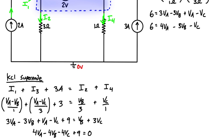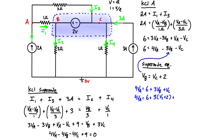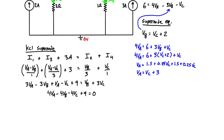The last equation is the supernode equation — the relationship between the two nodes inside the supernode: Vb = Vc + 2, because Vb is simply two volts higher than Vc. We can take this expression for Vb and plug it into our KCL at node A equation, and after simplifying we find that Va = Vc + 3.